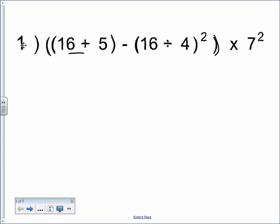When you have two sets of parentheses that aren't inside another one or are by themselves, technically you can do them both at the same time. 16 plus 5 is 21. Bring down the minus, 16 divided by 4 is 4.